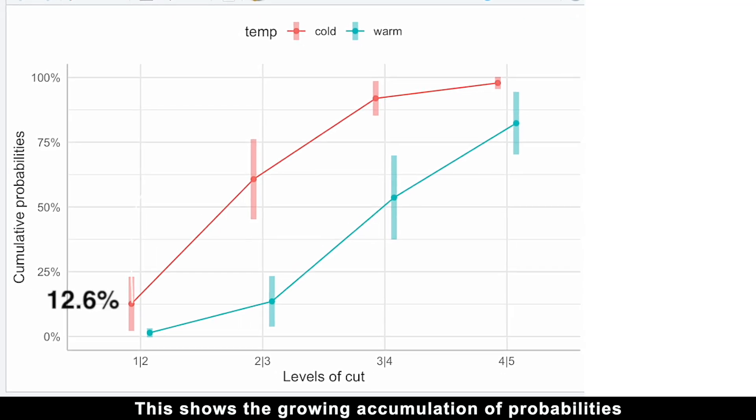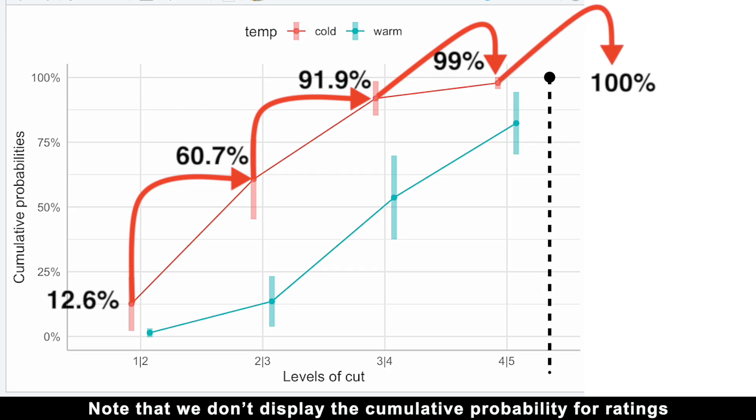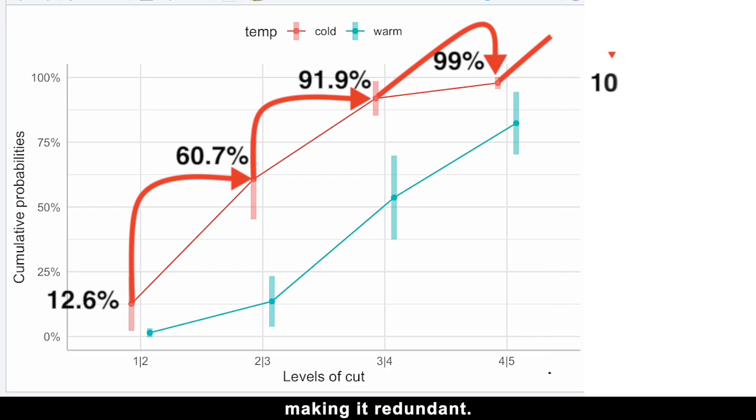But you know what's even cooler. We can use the same emmeans function to visualize cumulative probabilities too. This shows the growing accumulation of probabilities as ratings increase. Note that we don't display the cumulative probability for ratings less than or equal to 5, as this would always equal 100%, making it redundant.